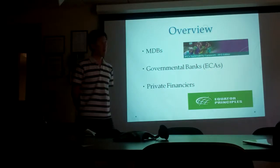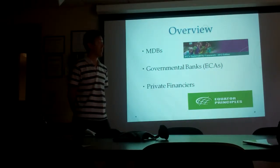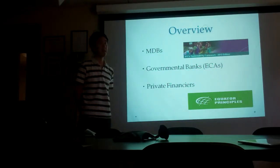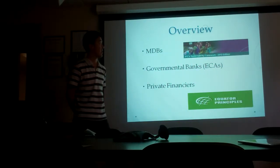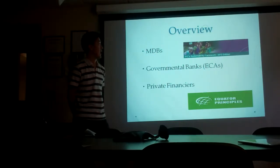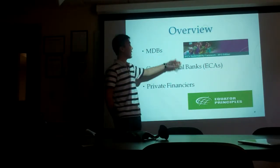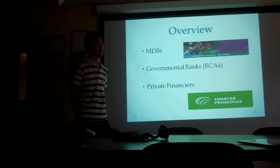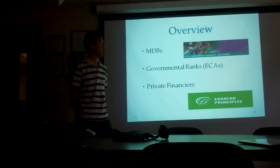Let me start with the overview of the guidelines adopted by financial institutions. There are three categories. Multilateral development banks like the World Bank, IFC, Asian Development Bank, et cetera, are the front runners in social and environmental guidelines adoption. The IFC's sustainability framework is kind of the standard in this sector.